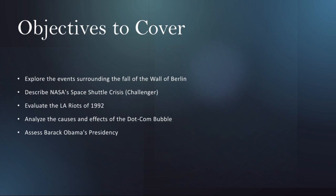Shifting gears, we'll be exploring the dot-com bubble, a phenomenon that gripped the late 1990s and early 2000s. Fueled by the rapid growth of internet-based companies, investors poured billions into startups with sky-high valuations, only to see many of them collapse when the bubble burst in 2000. The aftermath served as a cautionary tale about the dangers of speculative investing and the importance of sustainable business models in the digital age.